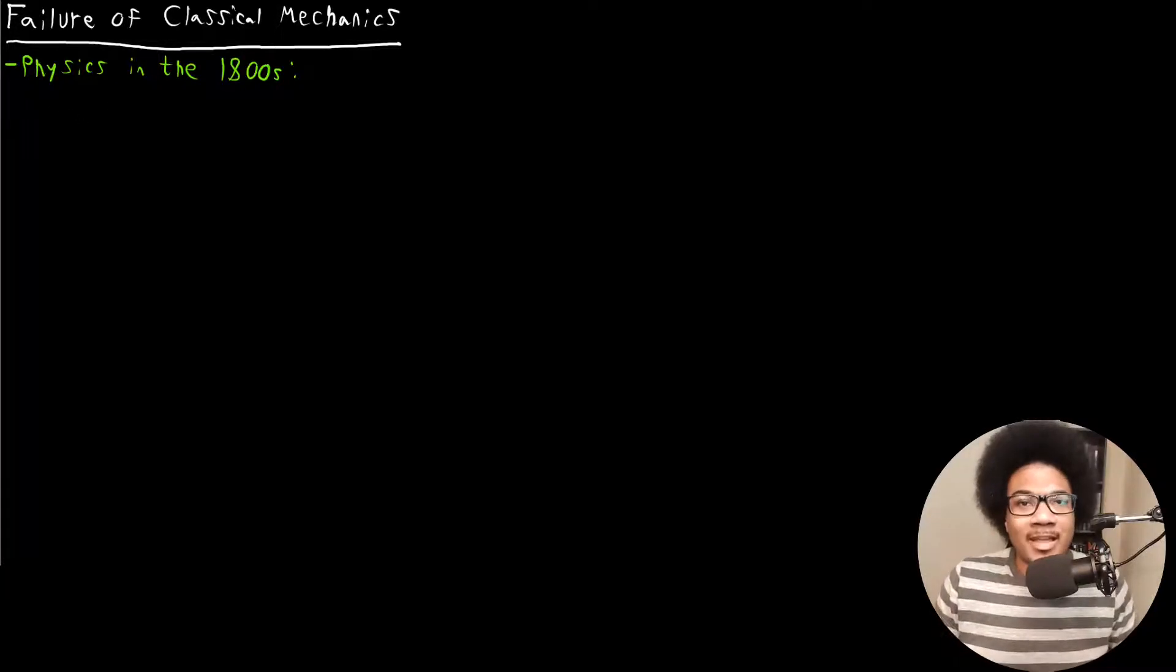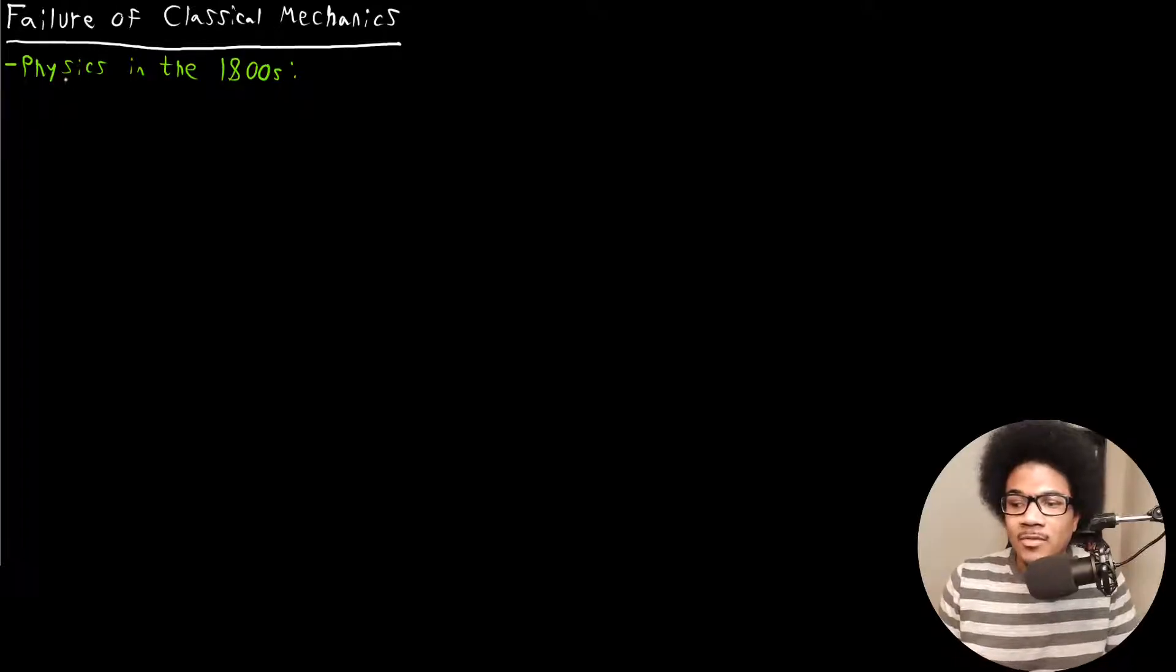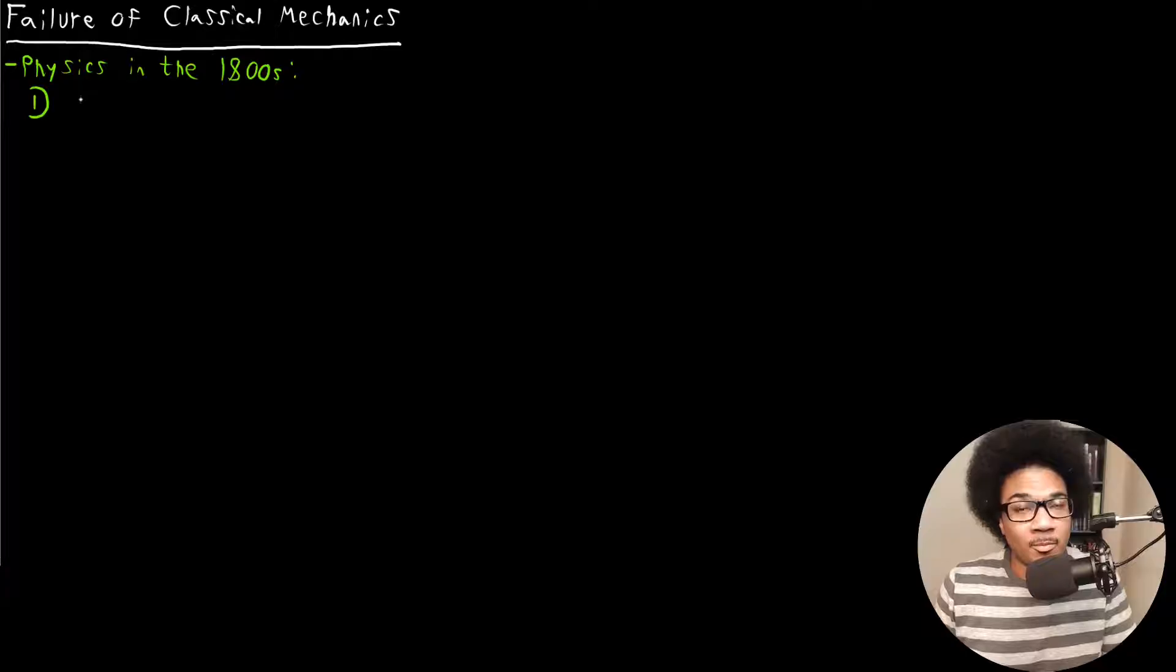So in order to understand this failure, I want to dive a little bit deeper into it and kind of take a little trip back into physics history and what was known at the time and how we came to graduate to quantum mechanics from some of these failures of classical mechanics. So let's take a trip back in history to physics in the 1800s. What was known about physics in the 1800s?